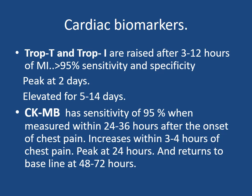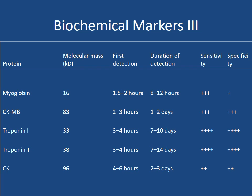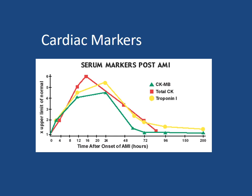Cardiac biochemical markers: Troponin T and Troponin I are raised 3–12 hours after MI with 95% sensitivity and specificity, peak at 2 days, and remain elevated for 5–14 days. CKMB has 95% sensitivity when measured within 24–36 hours of onset of chest pain, rises within 3–4 hours, and settles down after 48–72 hours. On the diagram, CKMB begins to appear after 4–6 hours, peaks at 24 hours, and settles by 72 hours, while Troponin I and T can persist up to 7–14 days.